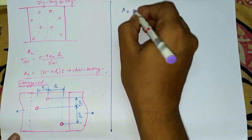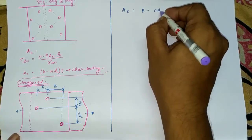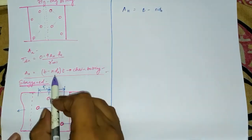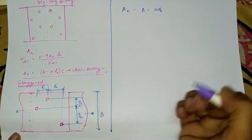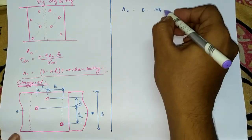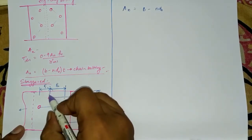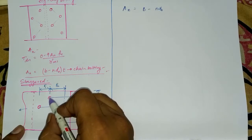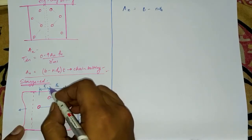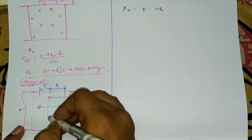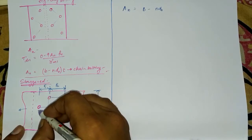Previously the net area formula was: An = (b − n × d0). However, if failure takes place, it will not occur along a straight line. So we cannot simply reduce the diameter part to get the net area. That is only valid when failure occurs in a straight line — giving only one bolt hole per failure path.